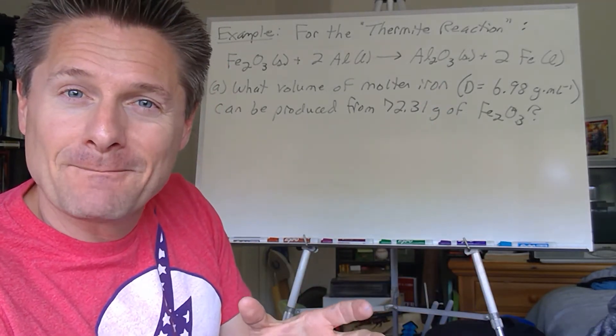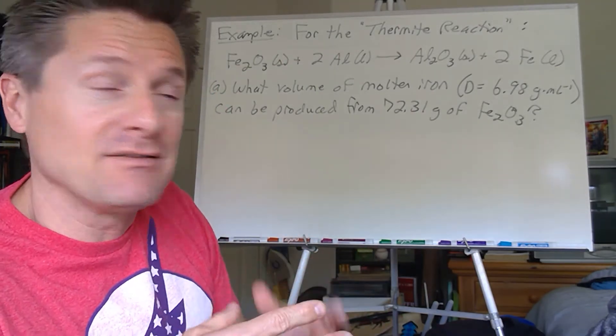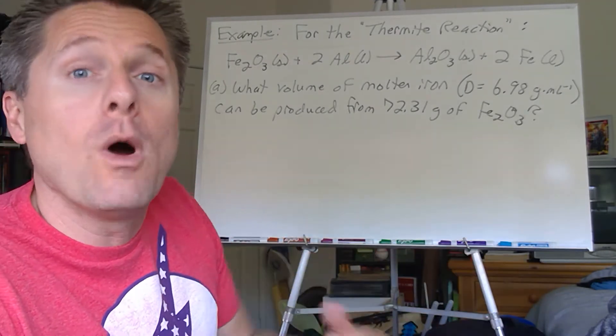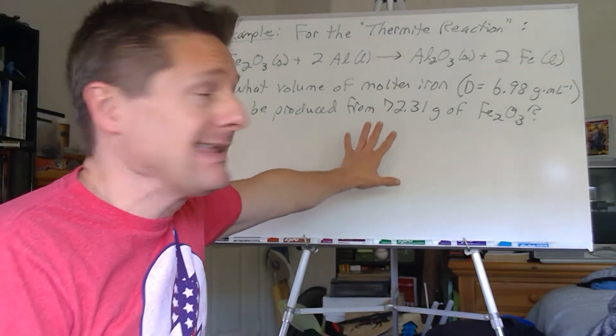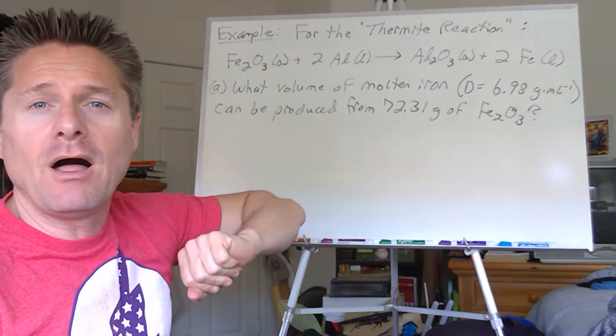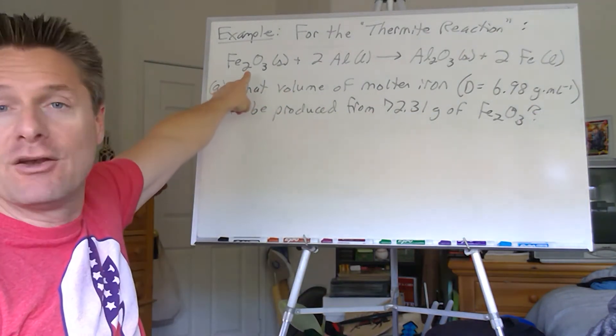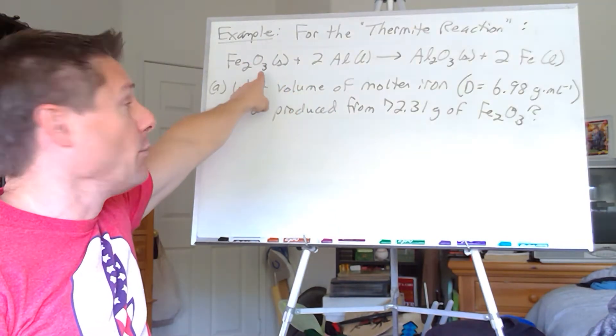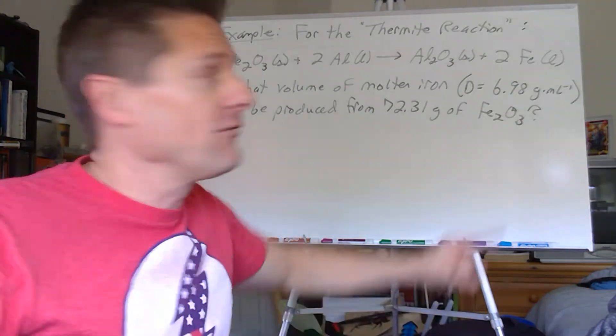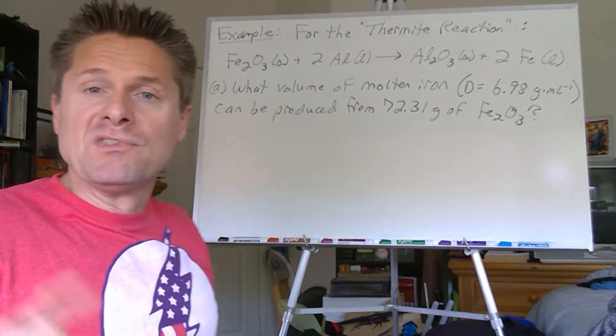That's part A. You can kind of assume there's going to be a part B. What if we collected that molten iron and let's say we could actually do this, we collect a volume. Obviously part B, I'm going to say hey, if this volume was collected what would be the percent yield? Let's pause the video, use simple stoichiometry, calculate the volume of iron, liquid iron or molten iron, that can be produced from 72.31 grams of iron oxide. Remember, take what you're given, get the moles of that species, convert to moles of that species. A simple one to two ratio, convert from moles of iron to grams of iron to milliliters.